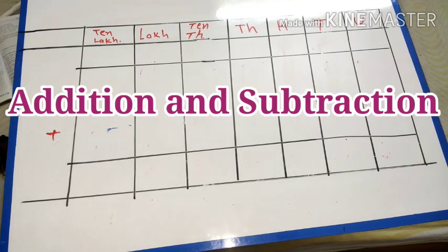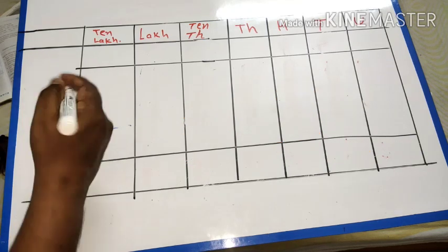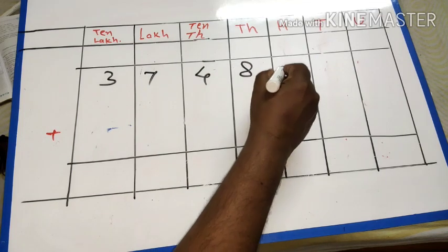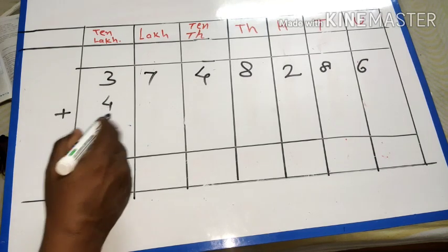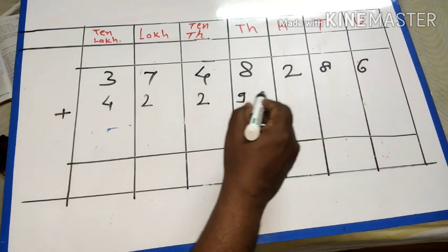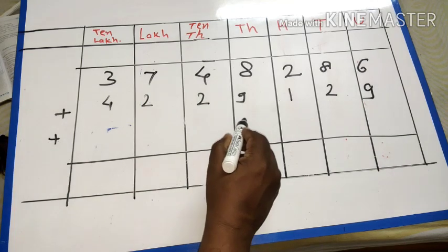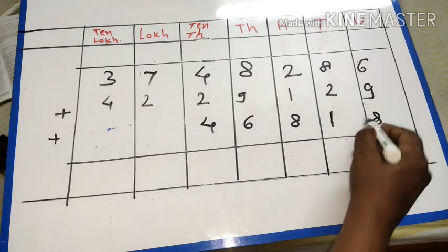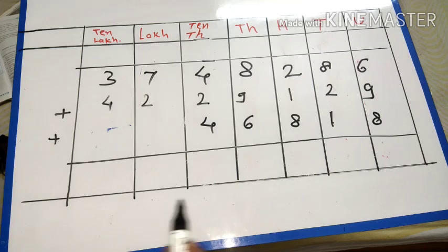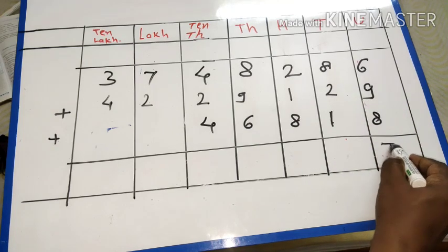Hello students, we shall learn about addition and subtraction of six-digit and seven-digit numbers. Now here, thirty-seven lakh forty-eight thousand two hundred eighty-six plus forty-two lakh twenty-nine thousand one hundred fifty-nine plus forty-six thousand eight hundred eighteen. Six plus nine plus eight equals fifteen.